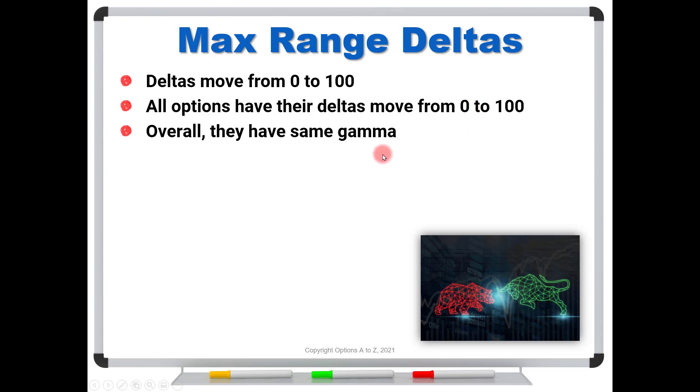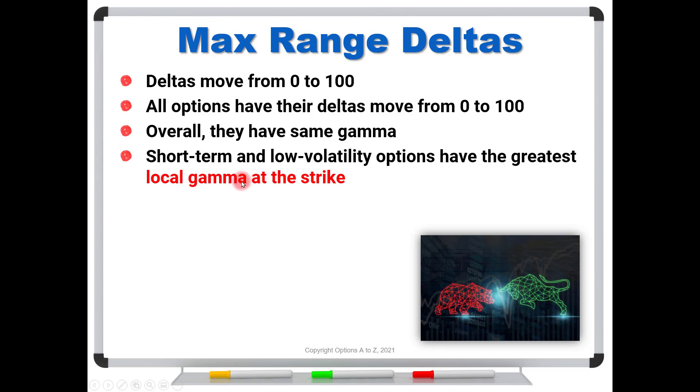So the better way to understand this concept of which options have the greatest gamma is that your short-term and low volatility options have the greatest what we call local gamma, which is at the strike. By local, it just means that in that small range right there around the strike prices. Yes, short-term and low volatility options will have very high gammas. But if you let that stock price rise or fall just a little bit, or if that volatility happens to spike a little bit, those can all go out the window.